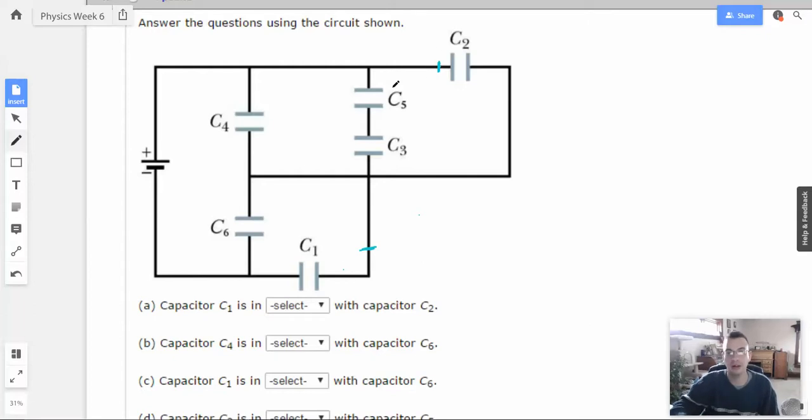If it's not in series, it has an alternate path where it can go. And it does, it can go through C6. Therefore, not in series. Neither. I'm just going to call it none, since none is shorter.